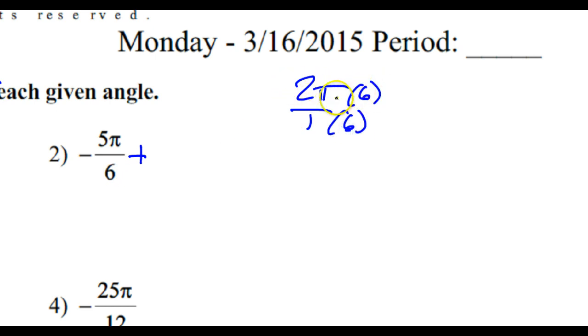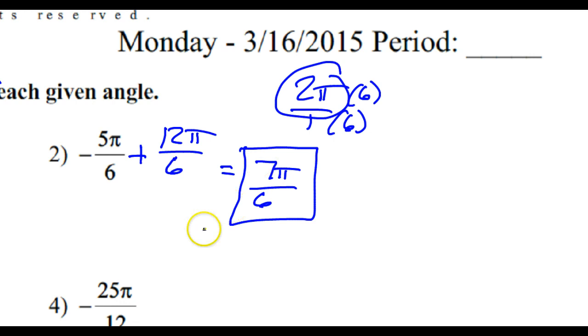So if I multiply it by 6 in the top and bottom, that's going to make 12π over 6. So I'm going to add 12π over 6. I'm really adding 2π, but I'm writing it as 12π over 6. Now, negative 5π over 6 plus 12π over 6 is 7π over 6. So that's going to be my coterminal angle.